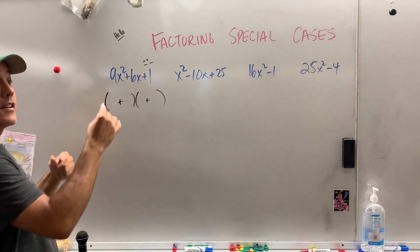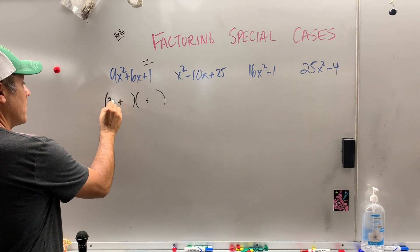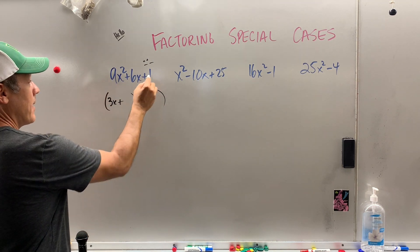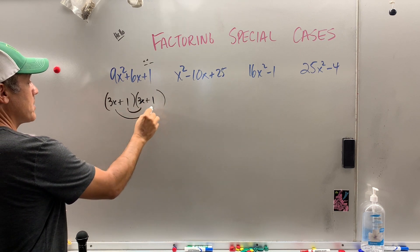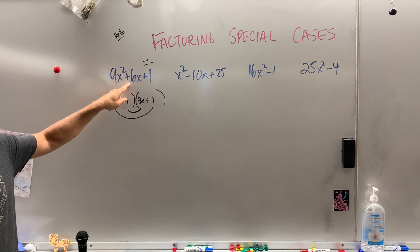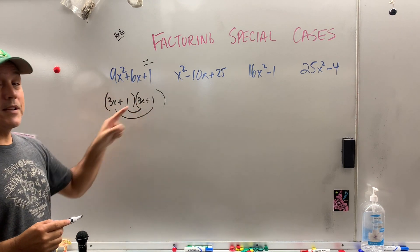Factors of nine: one and nine, three and three. I'm going to go with the ones closest together. Factors of one, it only has one. So let's double check. 3x plus 3x is 6x. Look at this. We got identical twins on our hand.